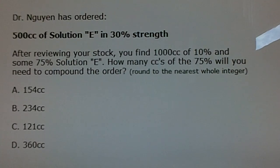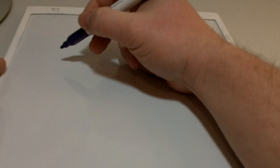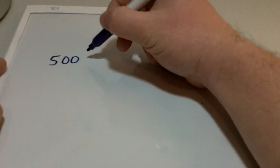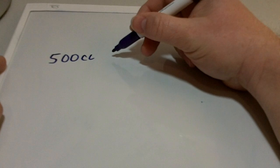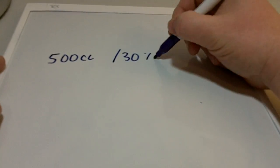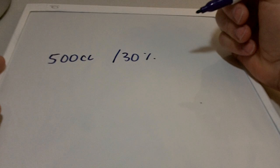So let's take it over to the whiteboard. Alright, so let's write out what the question is. The question says Dr. Nguyen wants 500 cc of 30% strength solution E.